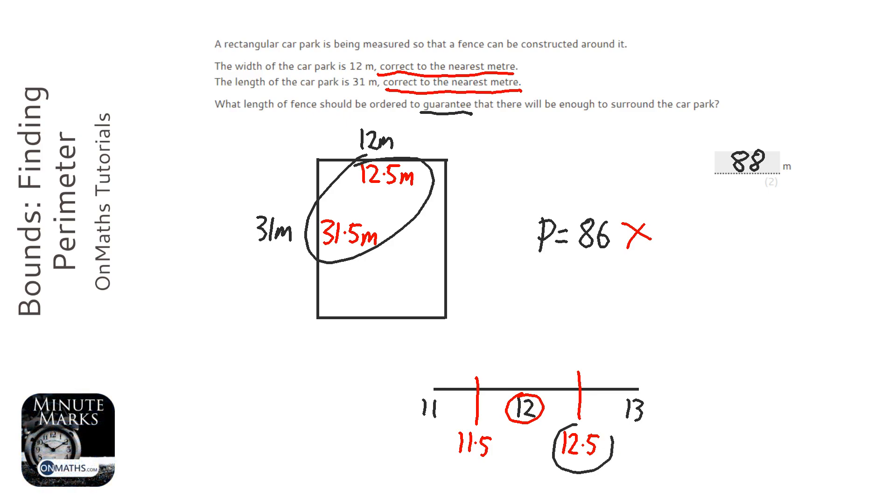Second thing is, a lot of you will highlight this number and go, that is actually wrong, it should be 12.49 recurring. The problem is 12.49 recurring is exactly the same as 12.5. 12.5 is a lot easier to use in your working out than 12.49 recurring. So I'd advise you to use 12.5, even though we know that that would round to 13.